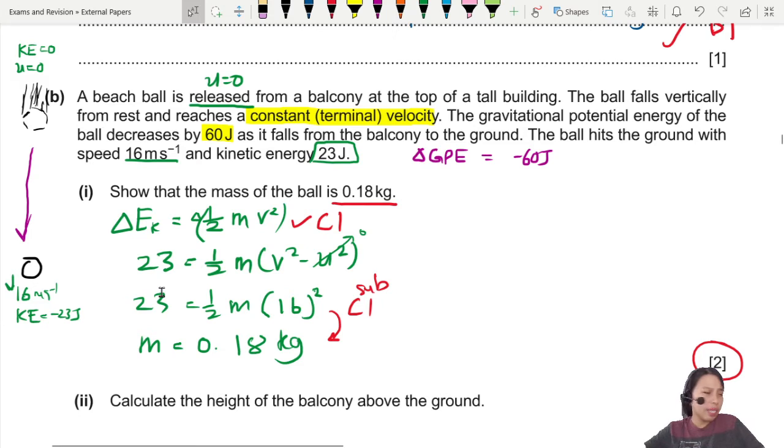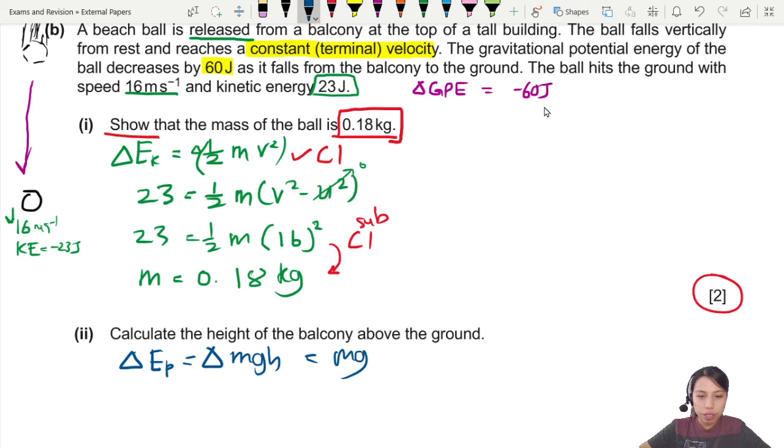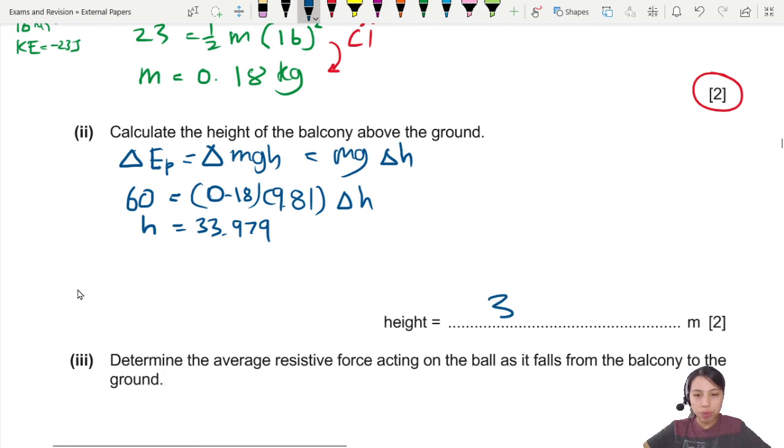Now in exam, if you didn't get to do this, it's okay. You take this answer that they asked you to show and you continue on in the next part. Calculate the height above ground. Just now we tried to use MGH, cannot find, right? Now we can use MGH. So change in potential energy is MGH. Because we're looking at a change, this is decreased by 60. Mass is 0.18, G is 9.81. You will find a height of 33.979, and for the final answer, you could write 34 or 33.0. One mark for final, one mark for MGH.